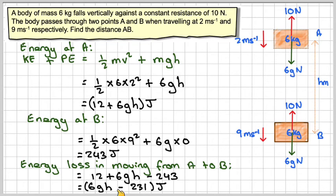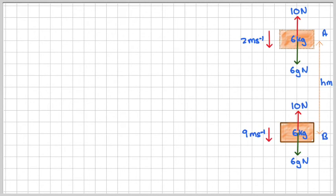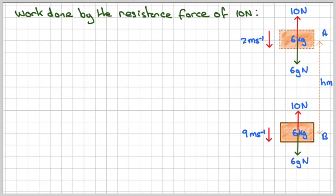Okay, so that energy loss occurs by the work done by that force falling down h metres. So using the same diagram, the work done by the resistance force of 10 newtons is going to be force times distance, which is going to be equal to the energy loss which we just calculated.